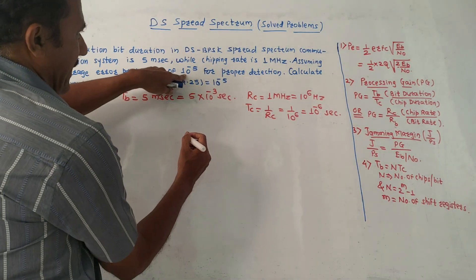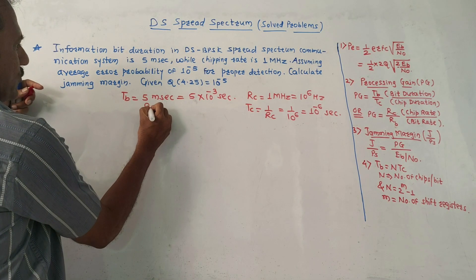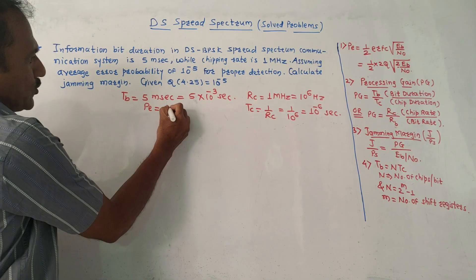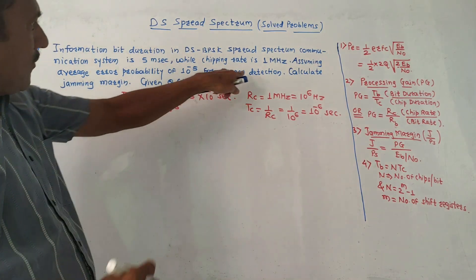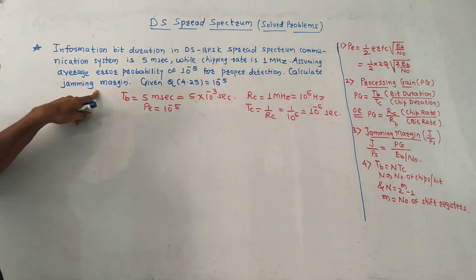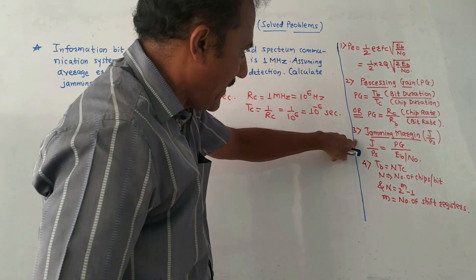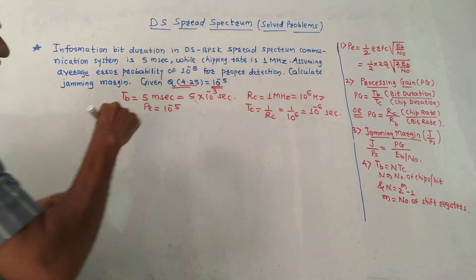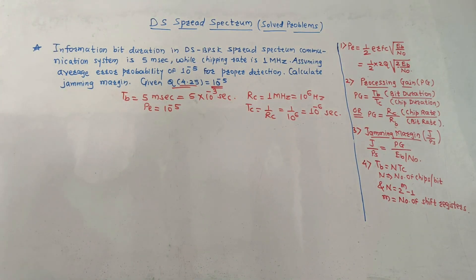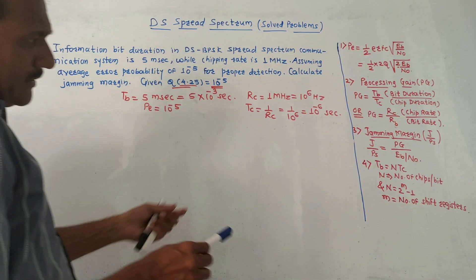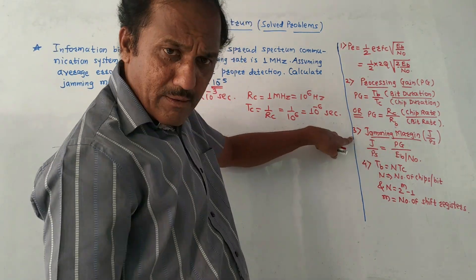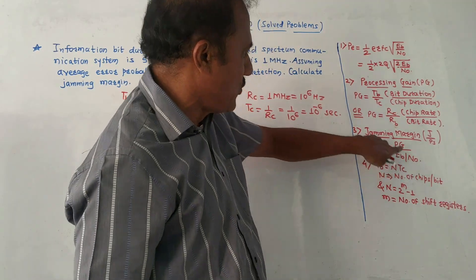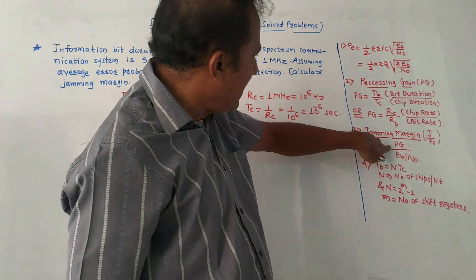Average probability of error is 10 raised to minus 5. So the given value of probability of error PE is 10 raised to minus 5 for proper detection. We need to calculate jamming margin. For calculation of jamming margin using formula 3, I need the value of PG and EB by N0. So first let us try to calculate PG.